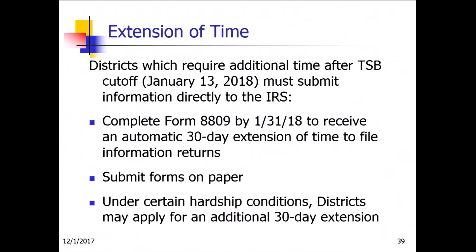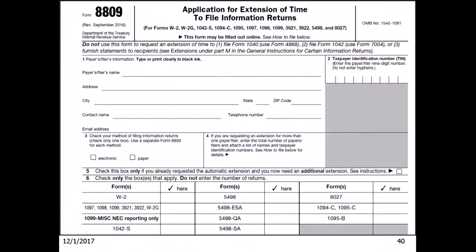If you need an extension of time, districts requiring additional time after the cutoff must submit the information directly to the IRS — these will be manual forms. You'll need to complete Form 8809, which is an extension of time form from the IRS, to receive an automatic 30-day extension. The forms must be submitted on paper and you can access Form 8809 through the IRS website at www.irs.gov. Here's an example of what Form 8809 looks like; you would complete it and submit it directly to the IRS.